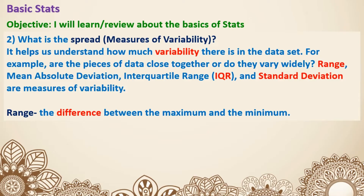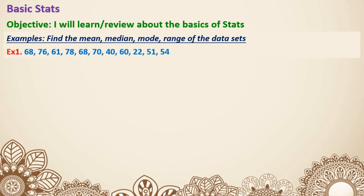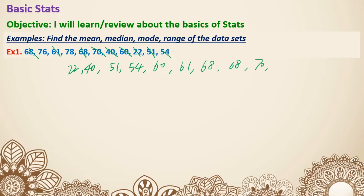Now let's have a look at a few examples to identify mean, median, mode, and range. Example one: the numbers are not in order, so we need to put them in order first. Smallest is 22, then 40, 51, 54, 60, 61, 68, 68, 68, 70, 76, and 78. We have 11 numbers in total.